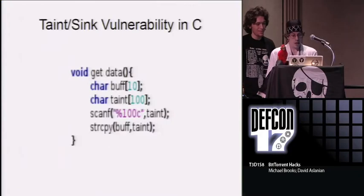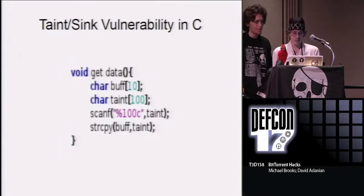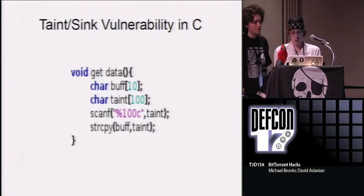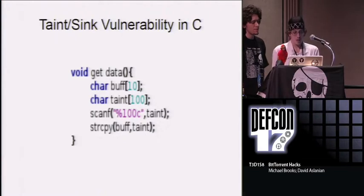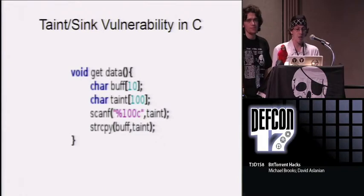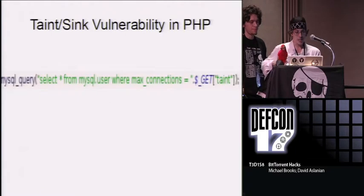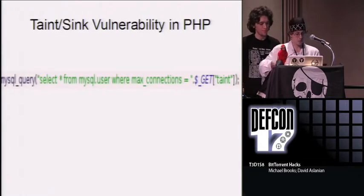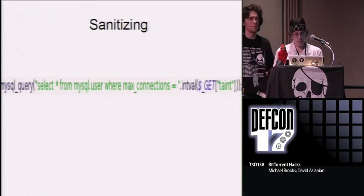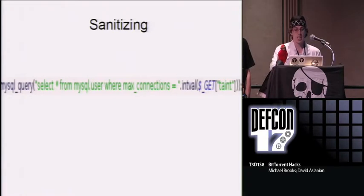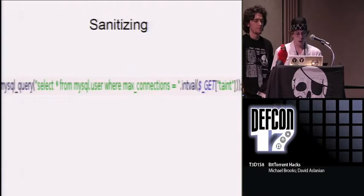Any data that the attacker controls is called tainted. If a variable containing tainted data is passed to a sensitive function, otherwise known as a sink, then a vulnerability is created. In this example, taint is coming from the command line using scanf. We're reading in 100 characters and then string copy is being used as a sink, and that is triggering a buffer overflow. Another example is in PHP MySQL. In this case, taint is a GET variable and MySQL query is a sink. Input validation is a way of taking tainted data and making it safe to use with a sink. In this case, we're using intval, passing it to GET before entering the query, making sure that it's a number.